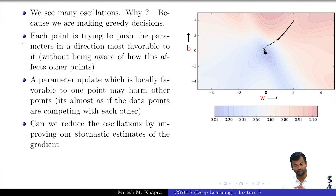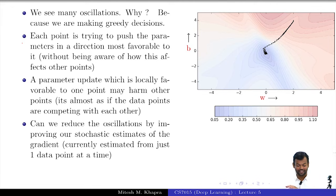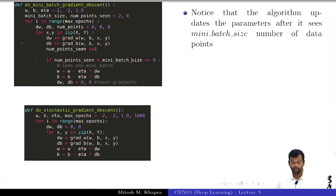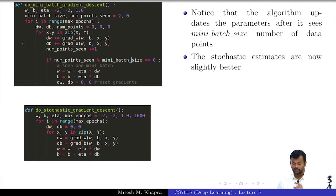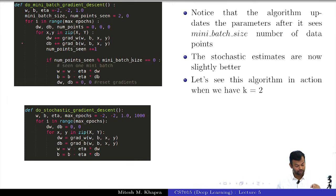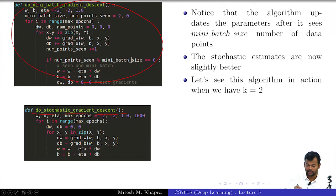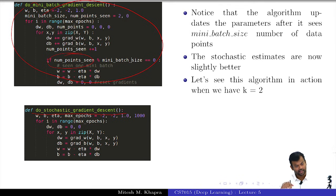Can we reduce the oscillations by improving the stochastic estimates? Yes. Let us look at a mini-batch version. Instead of computing the gradient for every single point, this code for mini-batch stochastic gradient descent waits for a certain number of points and then makes the update.